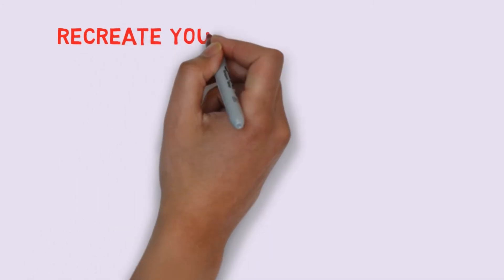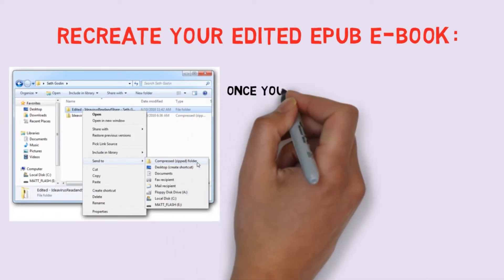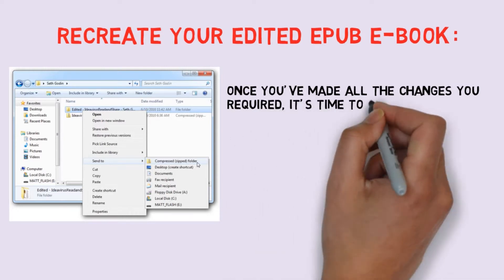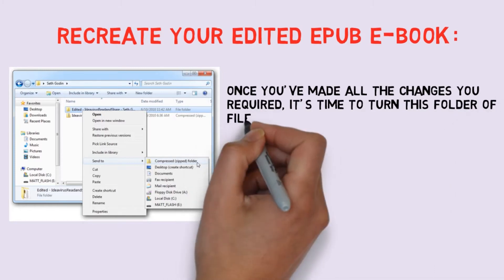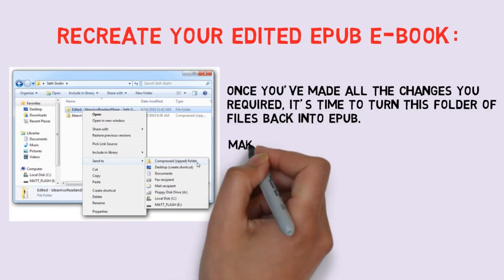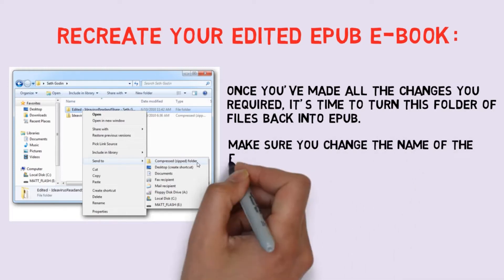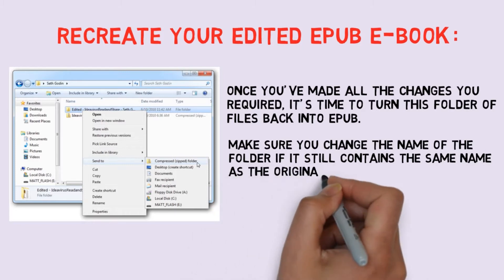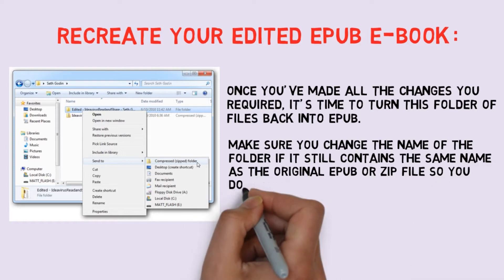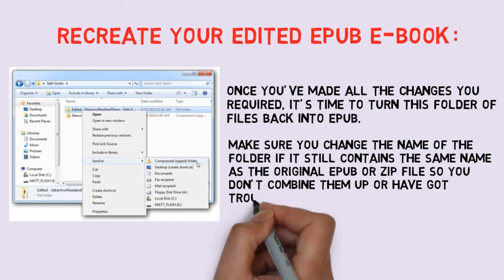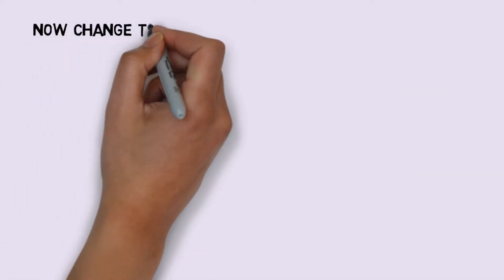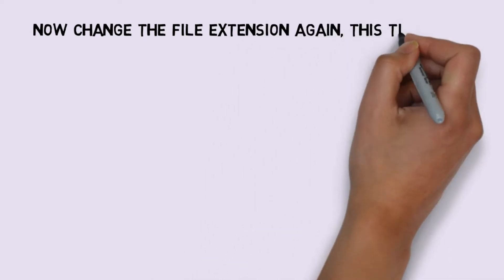Step 5: Re-create your EPUB eBook. Step 6-7: Once you've made all the changes you required, it's time to turn this folder of files back into EPUB. Make sure you change the name of the folder if it still contains the same name as the original EPUB or ZIP file, so you don't have trouble overwriting the old files. Step 8: Now change the file extension again, this time back to EPUB.